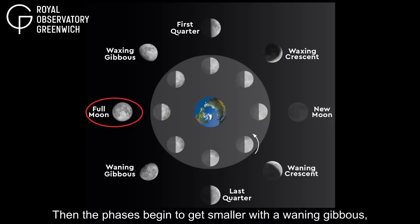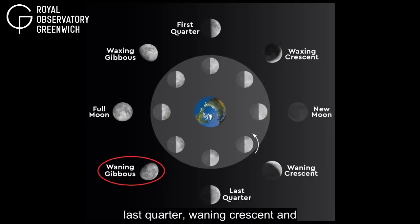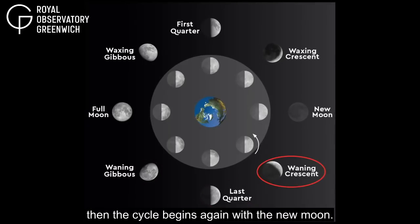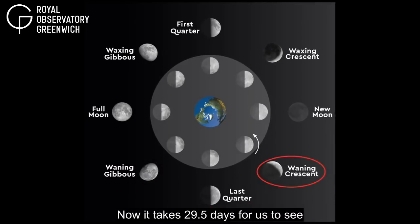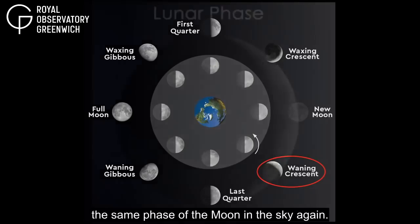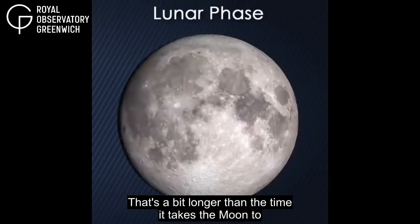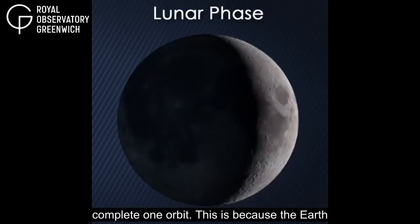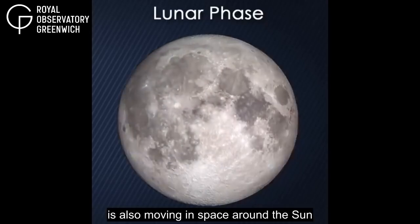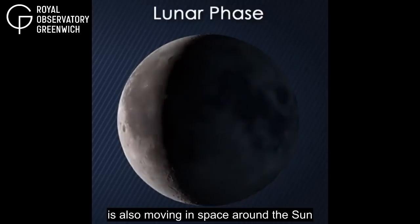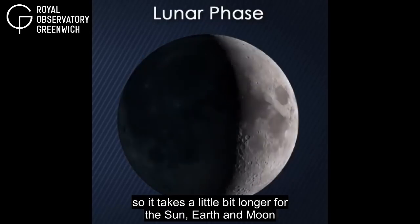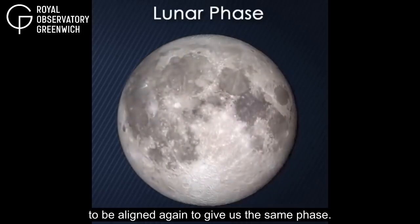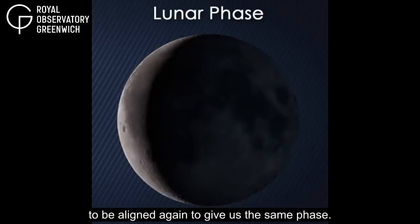Then the phases begin to get smaller with a Waning Gibbous, Last Quarter, Waning Crescent, and then the cycle begins again with a New Moon. It takes 29.5 days for us to see the same phase of the Moon in the sky again — a bit longer than the time it takes for the Moon to complete one orbit. This is because the Earth is also moving in space around the Sun, so it takes a little bit longer for the Sun, Earth and Moon to be aligned again to give us the same phase.